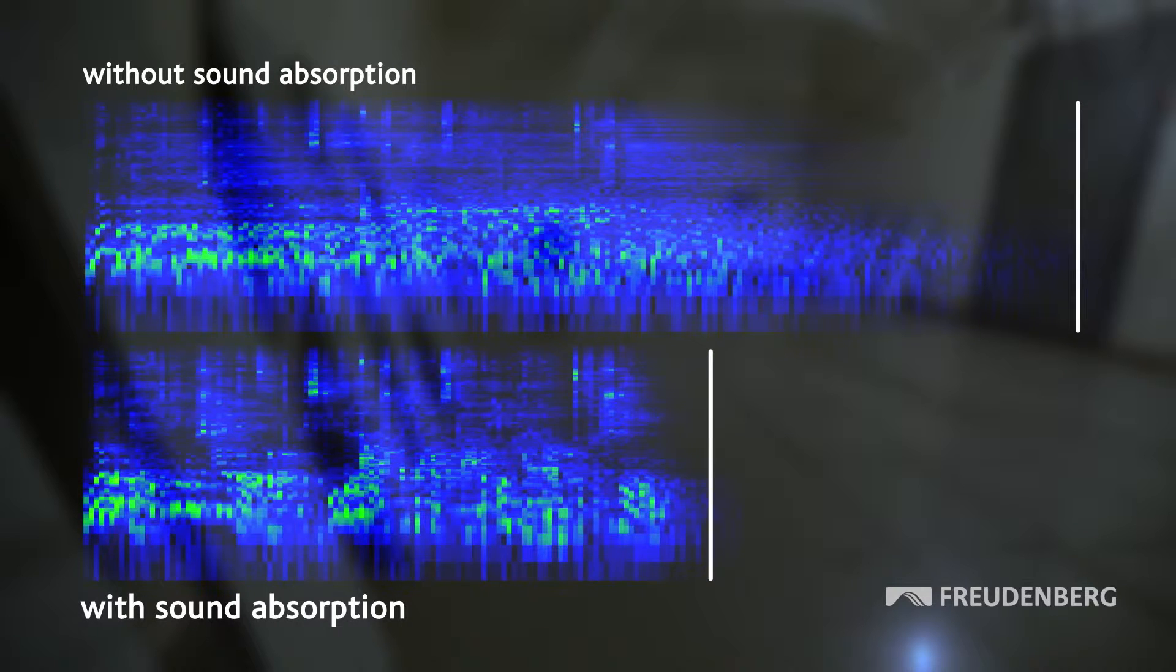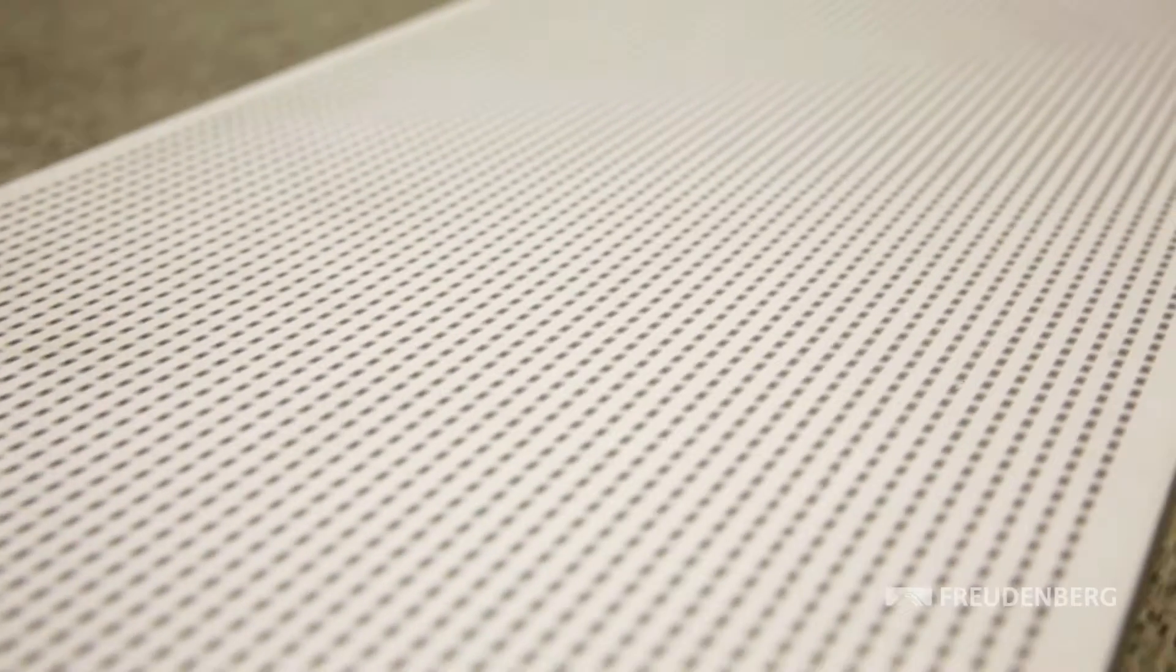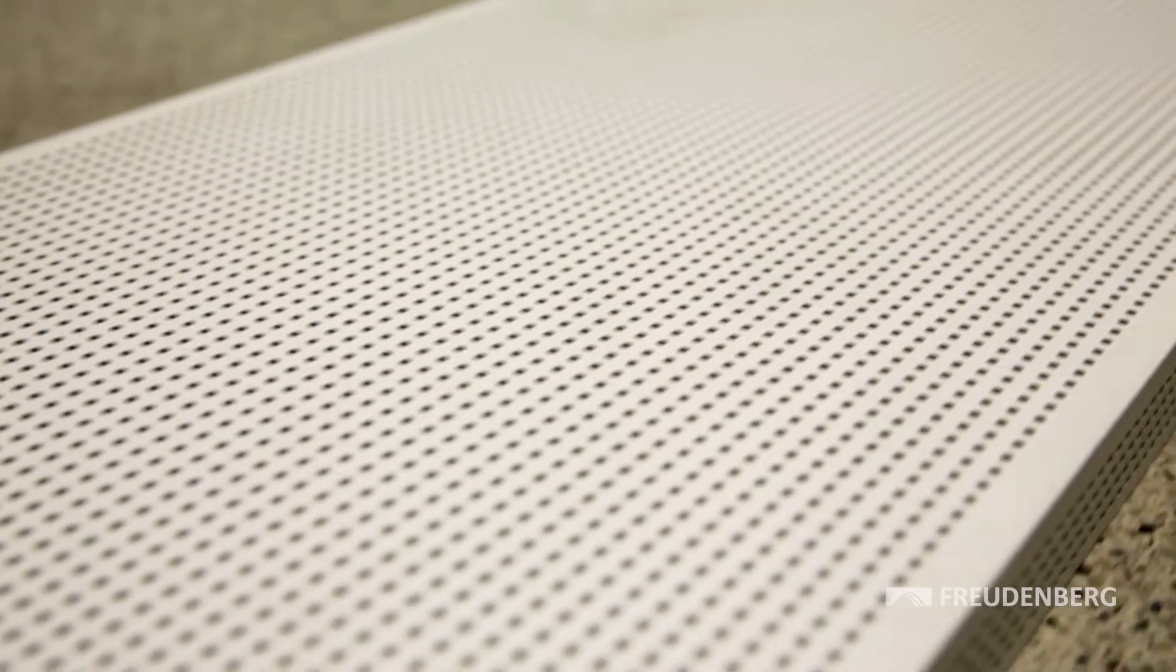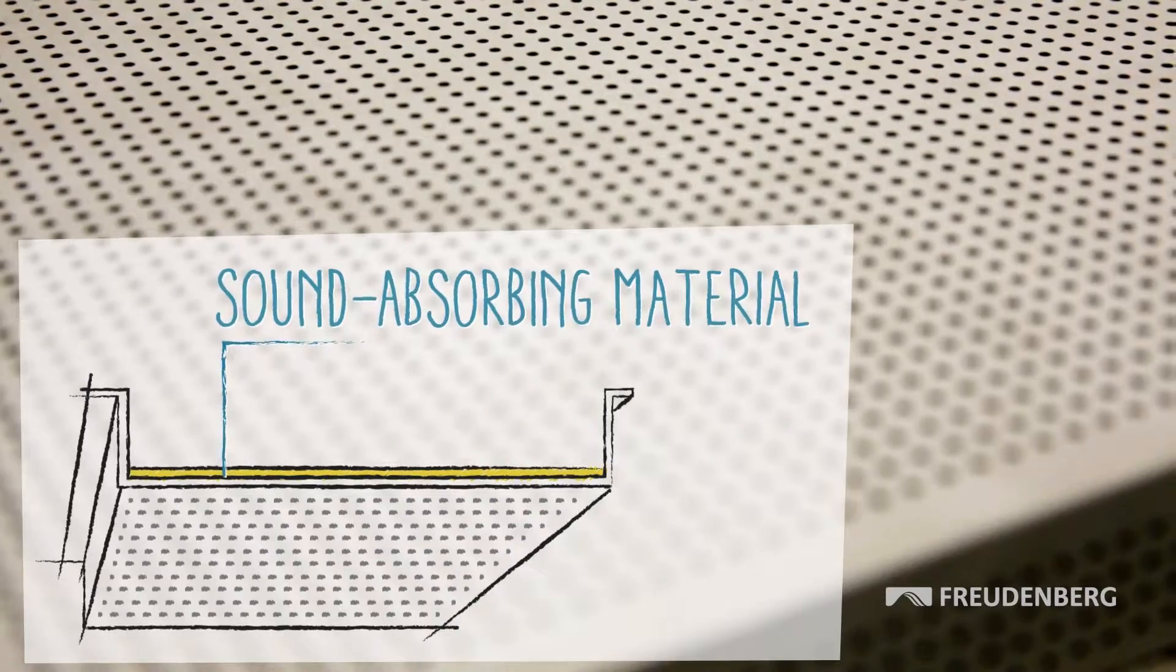The difference in reverberation is related to the sound absorbing perforated acoustic elements. They're generally made of metal, wood or plasterboard, and they're backed with sound absorbing materials.